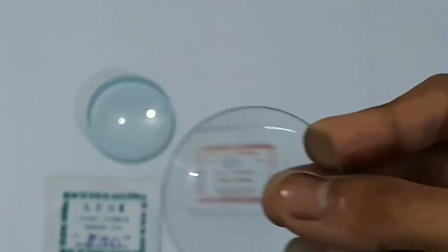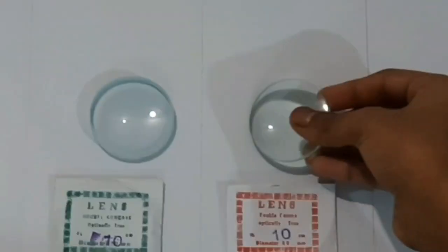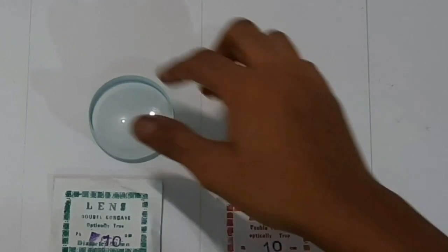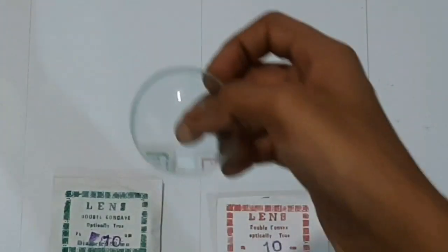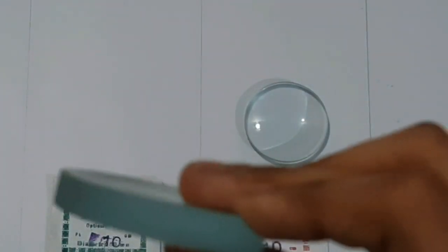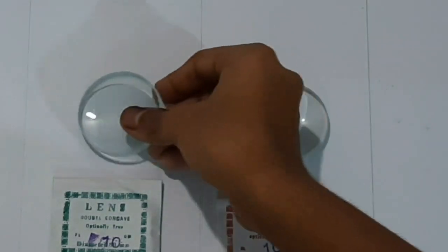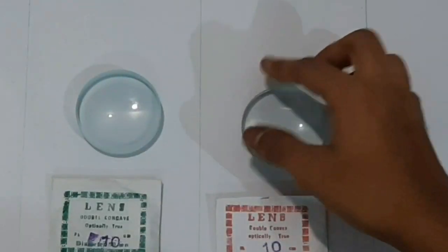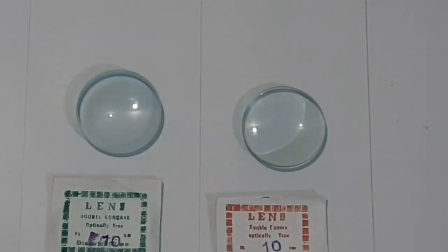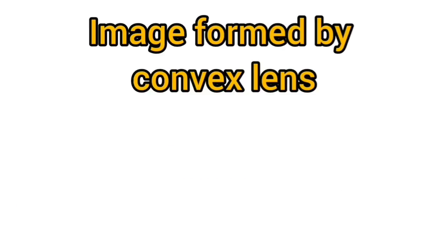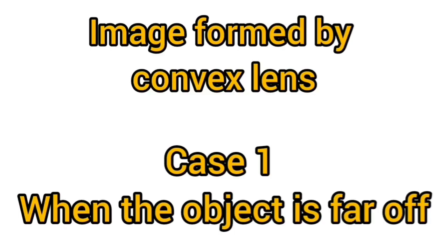Lenses which are thicker in the middle are called convex lenses. A convex lens is a converging lens. Lenses which are thinner in the middle than at the edges are called concave lenses. A concave lens is a diverging lens. This lens has a focal length of 10 centimeters.